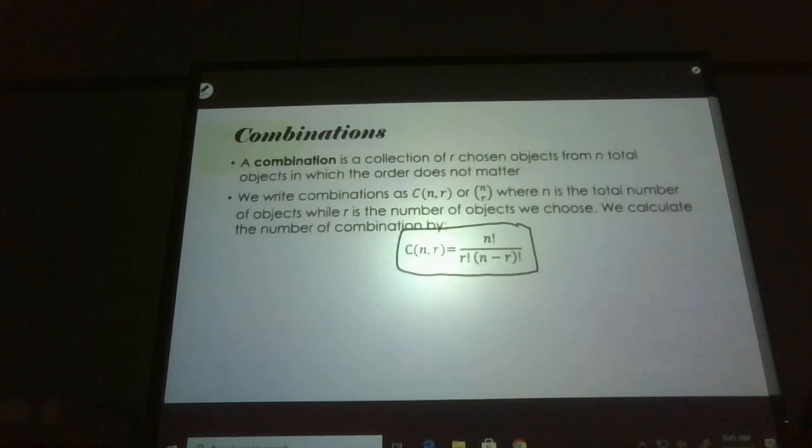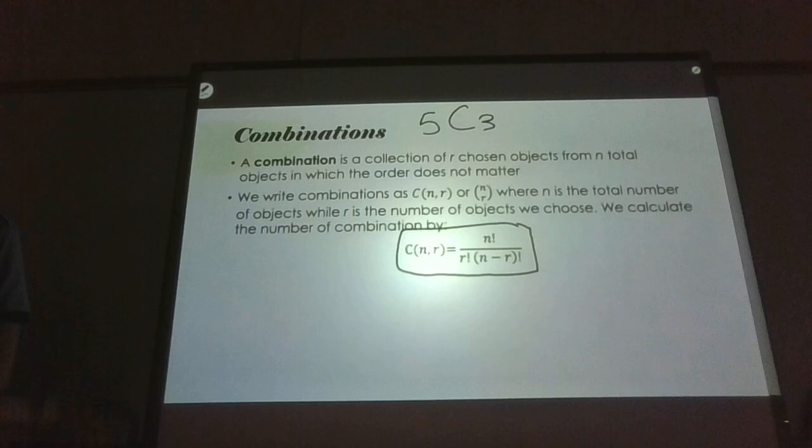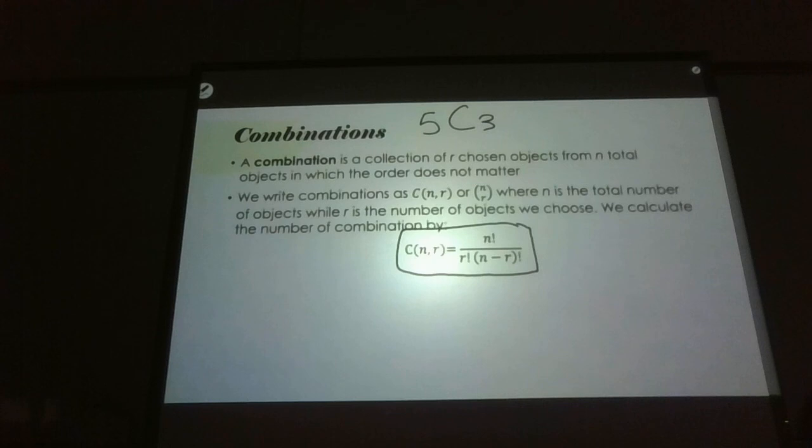You can verify this with your calculator. Try typing in '5 choose 3' — you should get 10, the same answer. If you don't have that button, you'll need to use the formula. Just as a heads-up for the quiz, I may give you an expression in terms of combinations or permutations and ask you to match it with the correct calculation format.